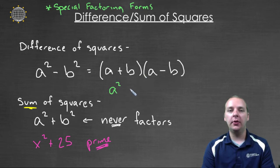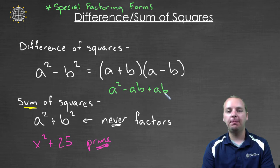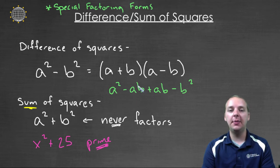the outer gives you -ab, the inner gives you +ab, and the last gives you -b². You have -ab and +ab that cancel every time, and you get a² - b².